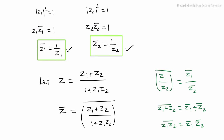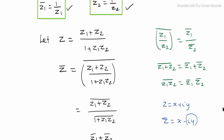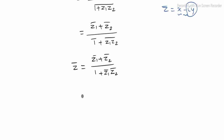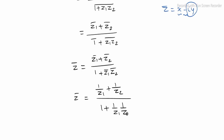Now substituting z1 bar equals 1 by z1 and z2 bar equals 1 by z2, we get z bar equals 1 by z1 plus 1 by z2, whole divided by 1 plus 1 by z1 into 1 by z2.